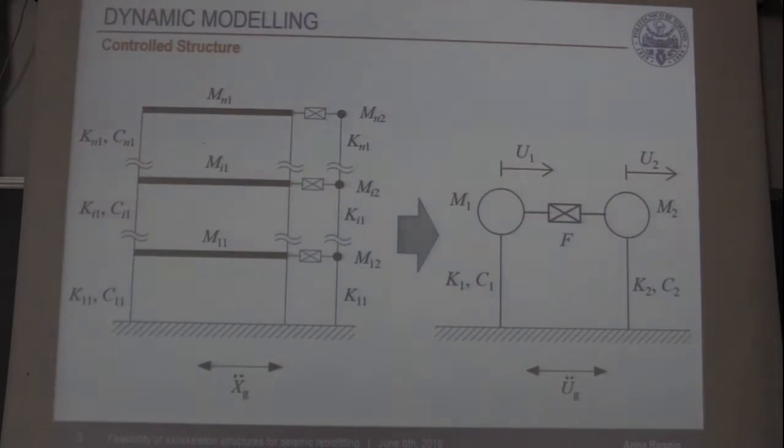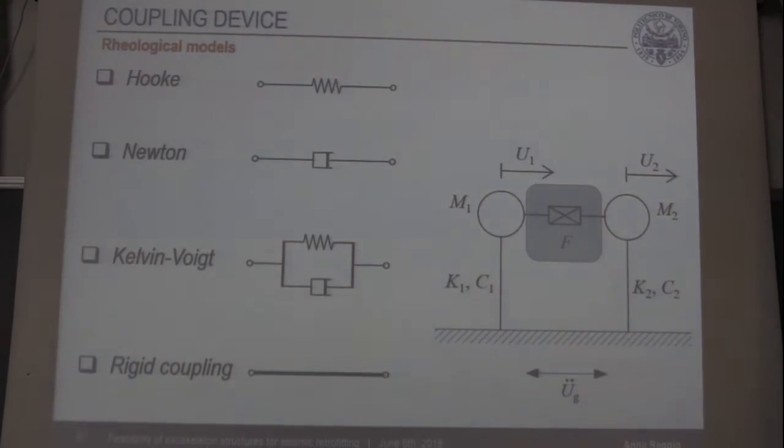In the controlled configuration, the building is retrofitted by way of an exoskeleton structure that is represented here as a lumped mass model connected to the frame structure. In this case, the reduced order model is a two degree of freedom model, given by two viscoelastic oscillators placed in parallel. The coupling device here exerts a coupling force F that can be modeled according to different constitutive laws.